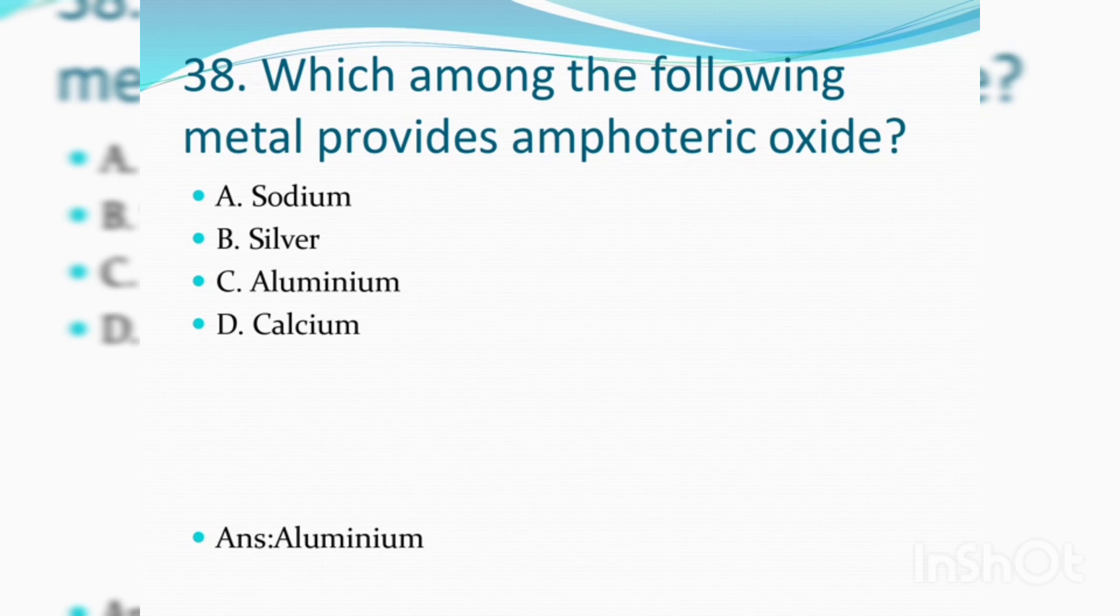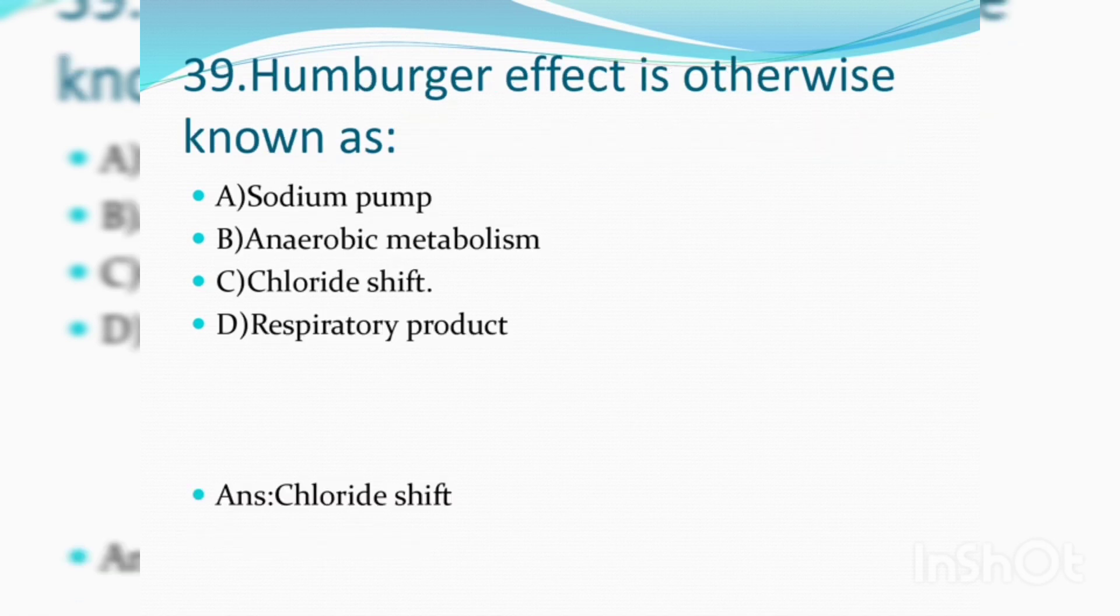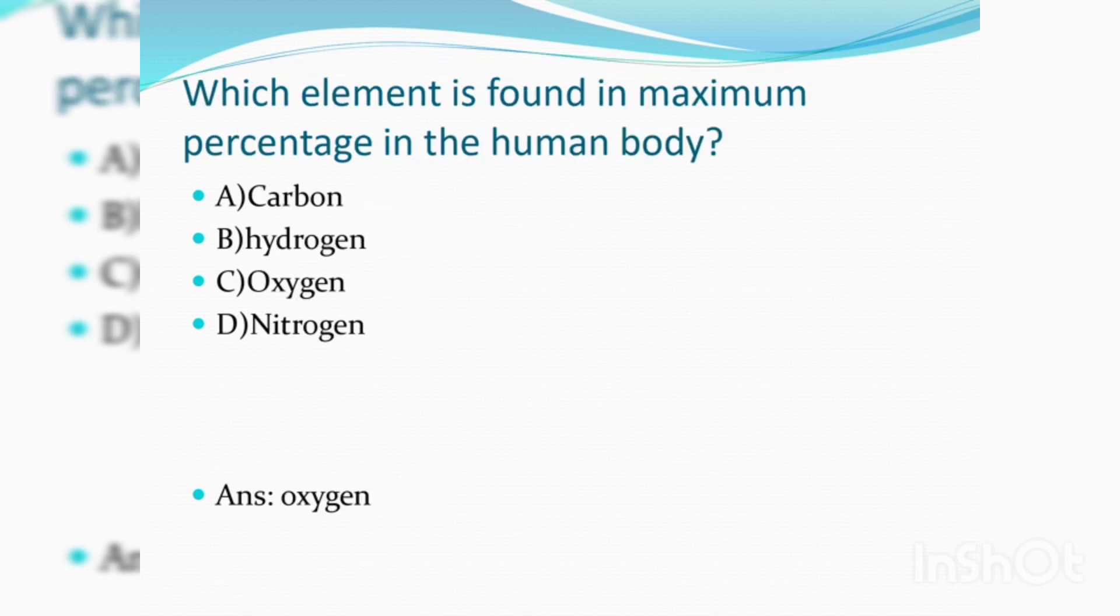Which among the following metal provides amphoteric oxide? Aluminium. Hamburger effect is otherwise known as chloride shift. Which element is found in maximum percentage in the human body? Oxygen.